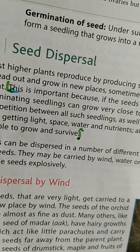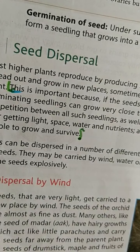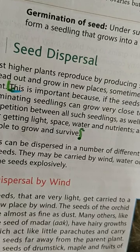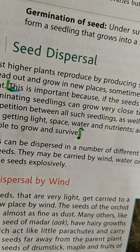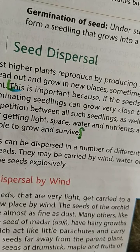The chapter is completed and the exercises are also completed. In our next class we will start a new chapter. Children, note down your home assignment: you have to do Part A, B, and C of the chapter reproduction in plants. That's all for today.